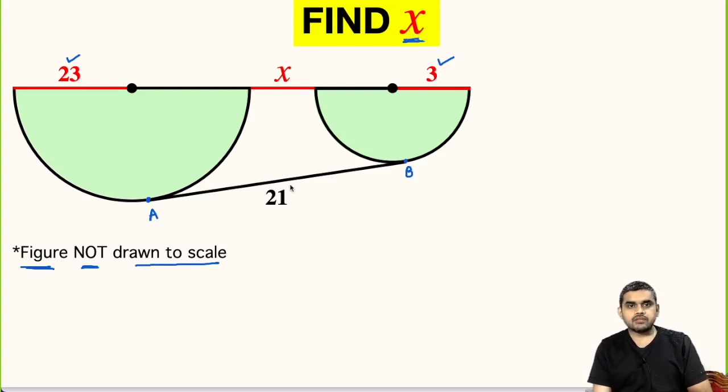In order to solve this question we need to do some modifications. Let us join these two points. Likewise we need to join these two points. Now this angle is 90 degrees. Also this angle will be 90 degrees.